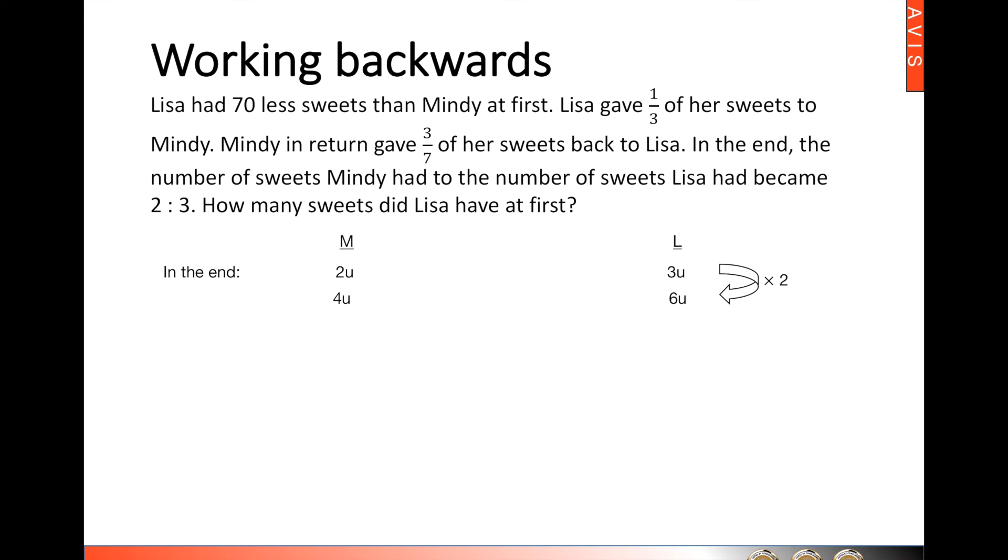Then, Mindy would take back 4/7 of her sweets from Lisa, which is 3 units. So, the ratio of Mindy to Lisa would then be 7 is to 3.